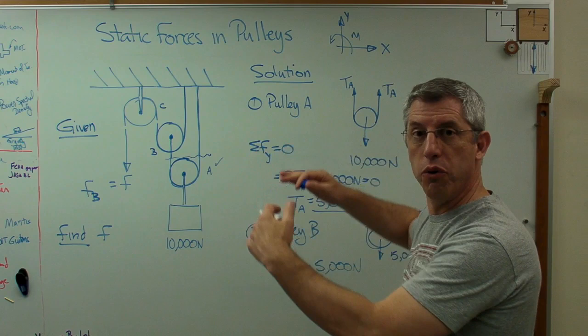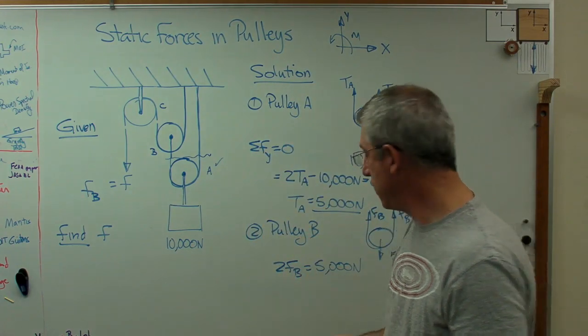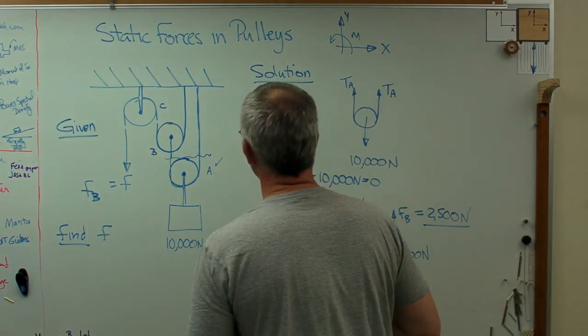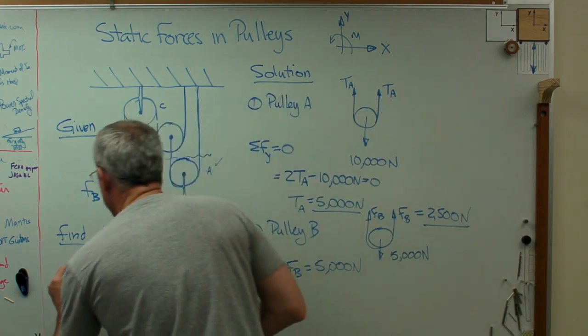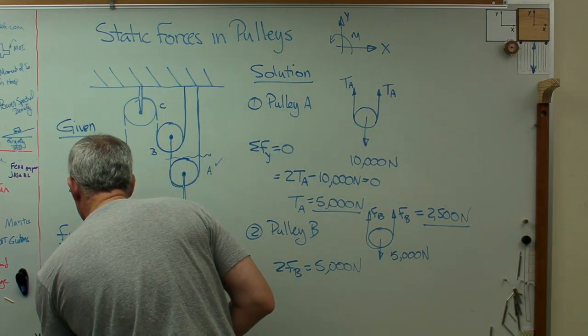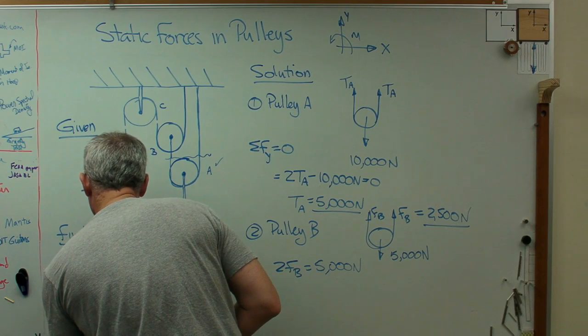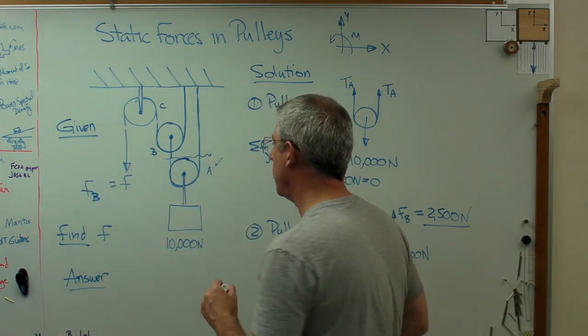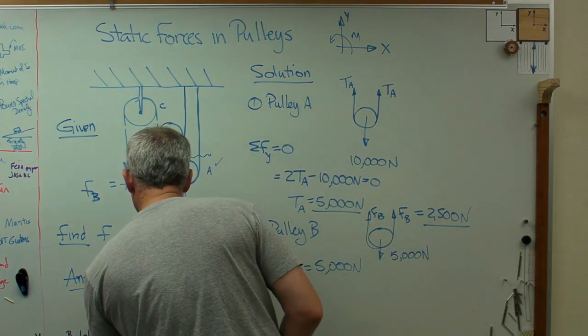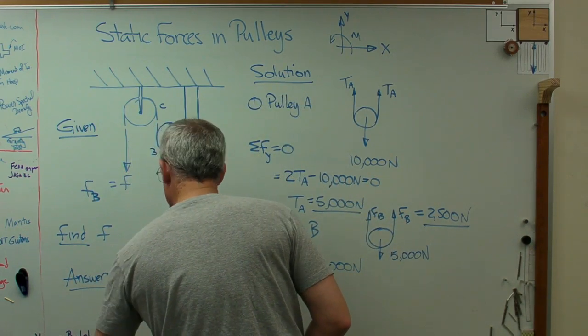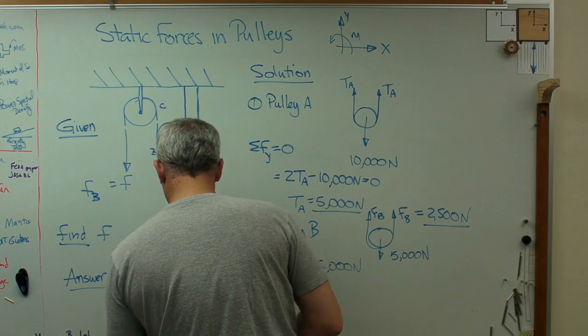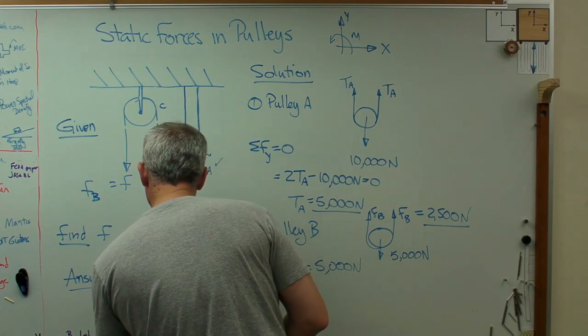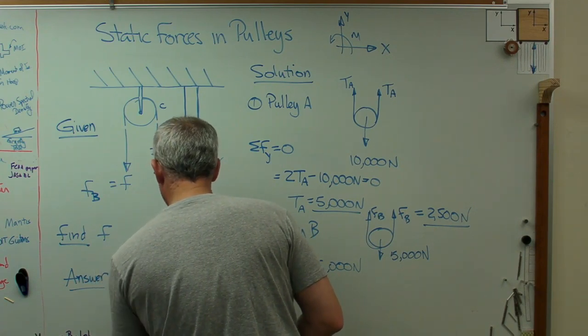Because I'm on the board here, I'm going to have to do some erasing. Let's just do this. Let's see if I can squeeze it in here. Now this isn't completely kosher here, but because of the space limitations, I'll do this. F equals 2,500 newtons.